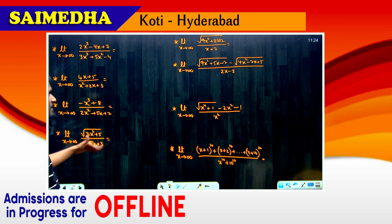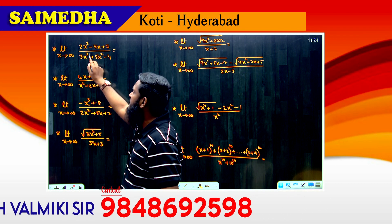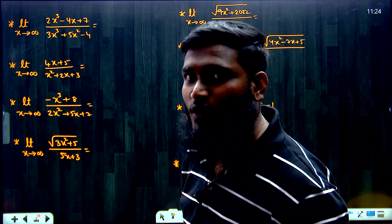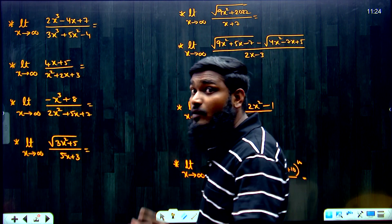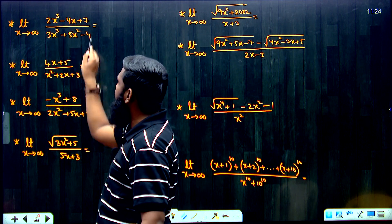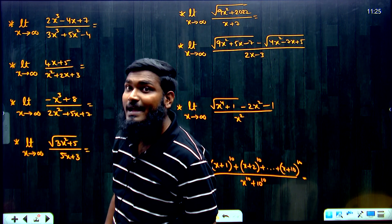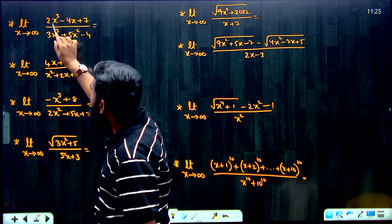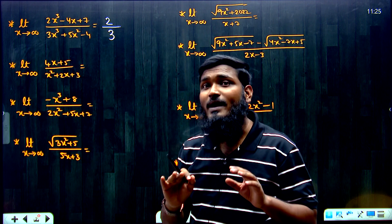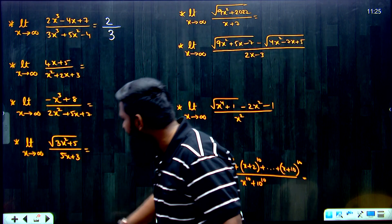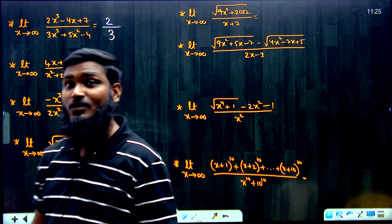Let us apply this to the first question: limit x tends to infinity of (2x³ - 4x + 7) divided by (3x³ + 5x² - 4). From the complete question, the highest degree term is x³. The coefficient of x³ in the numerator is 2, and in the denominator is 3. So the answer is 2/3.